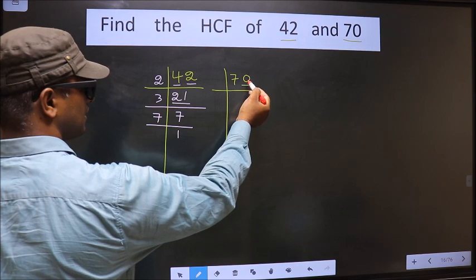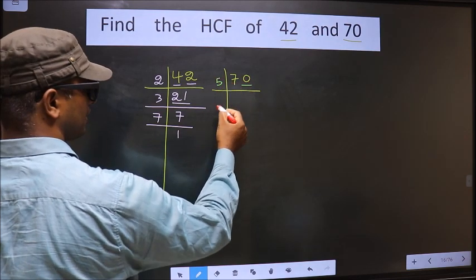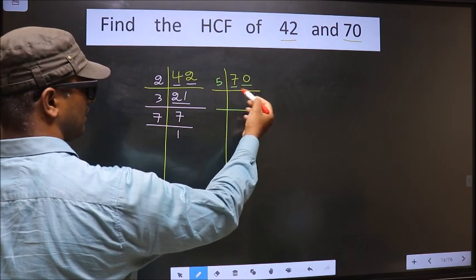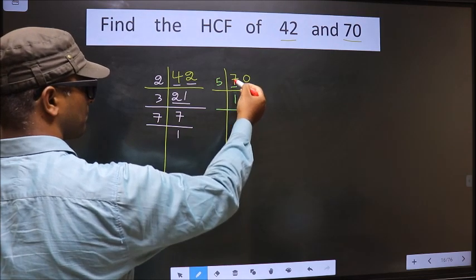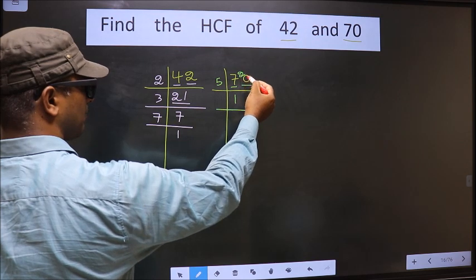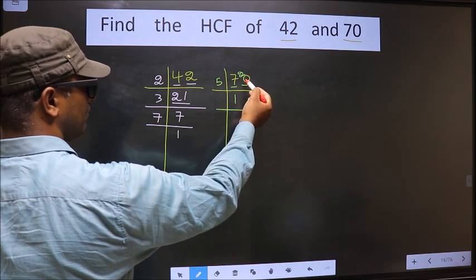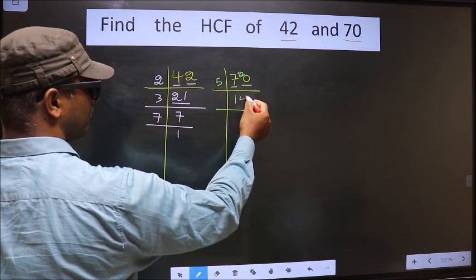For this number, last digit is 0. So we take 5 here. The first number is 7. A number close to 7 in 5 table is 5, 1 is 5. 7 minus 5, 2, 2 carried forward making it 20. When do we get 20 in 5 table? 5, 4 is 20.